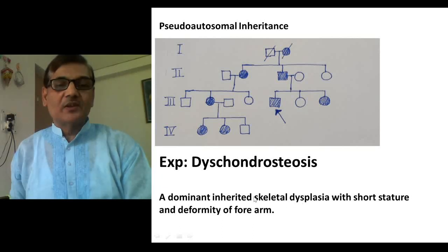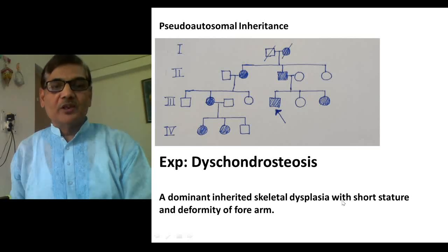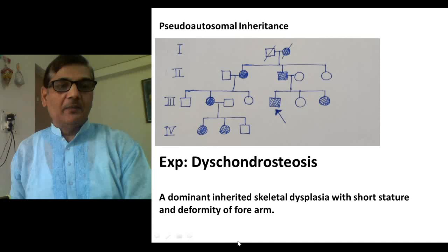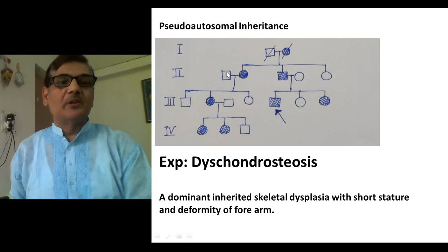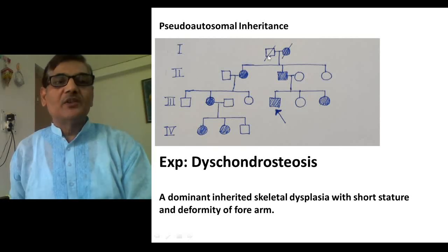Dyschondrosteosis is a dominant inherited skeletal disorder in which particularly the limb bones are affected. Such individuals are short-statured and also have deformity in their forearms. It is a skeletal system disorder.